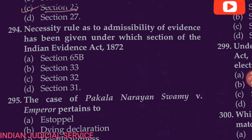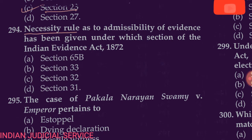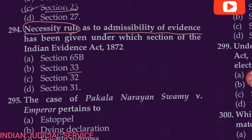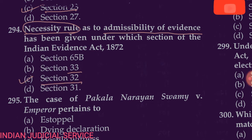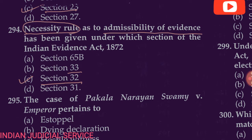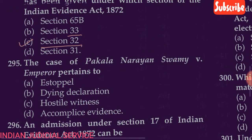Question number 294: The necessity rule as admissibility of evidence has been given under which section of the Indian Evidence Act? The options are Section 5B, Section 33, Section 32, and Section 31. In this question, the necessity rule as admissibility of evidence is provided under Section 32 of the Evidence Act, which provides for statements given by a person who is dead, incapable of coming before the court, not found, or belongs to a remote area without access to the court. So Option C is correct.